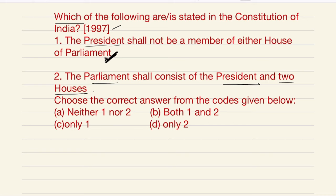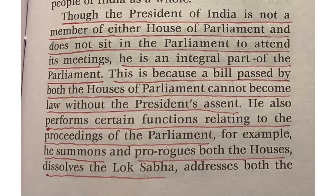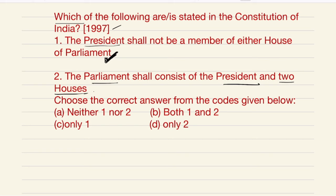In the polity book of Laxmikanth, chapter 22 on Parliament, it says in the very first page that though the President of India is not a member of either house of Parliament and does not sit in the Parliament to attend its meetings, he is an integral part of the Parliament.